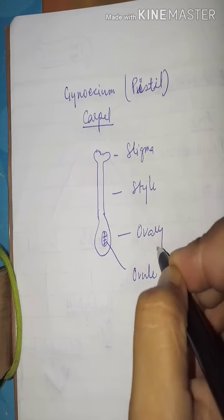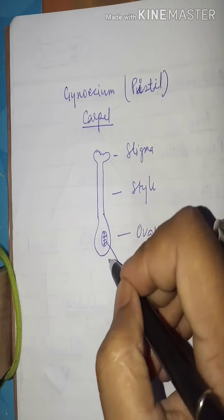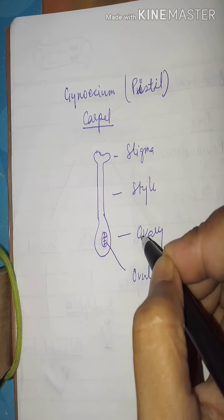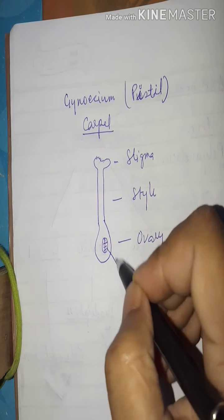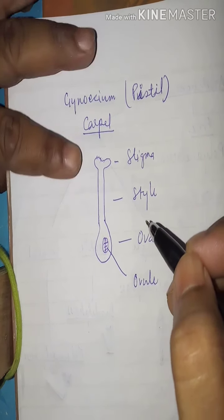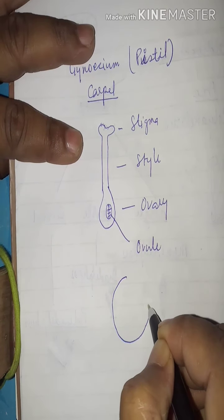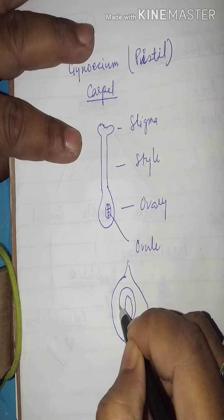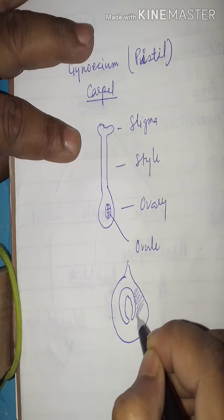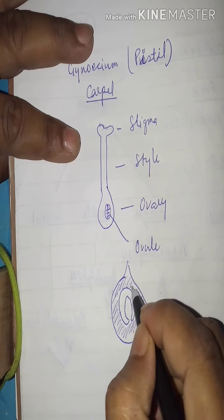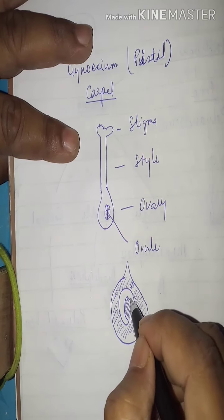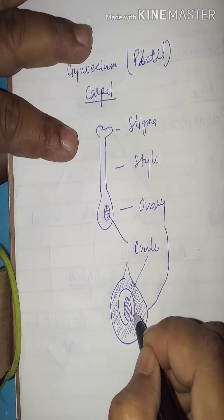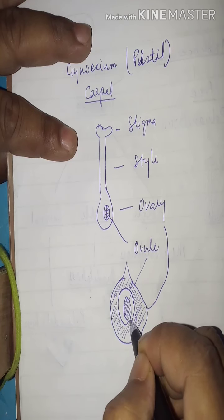The style is a long cylindrical tube. The ovary is the swollen basal part that contains one or more carpels. The ovule is the innermost part located inside the ovary, attached to the inner wall of the ovary.